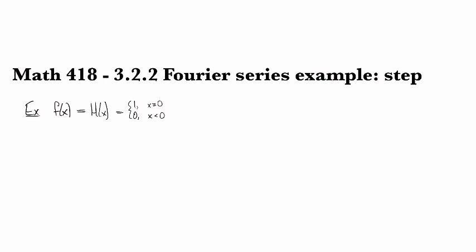In this example, we compute the Fourier series for the step function on the interval from minus pi to pi. In particular, we're looking at the Heaviside or unit step function, which is equal to 1 for non-negative values and 0 for negative values.